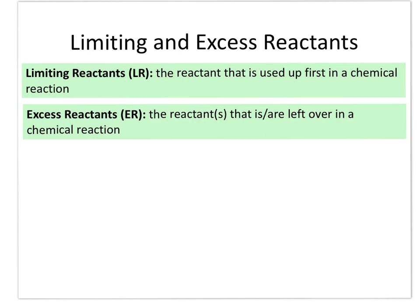Let's look at the calculation of excess reactant available after a reaction has occurred. As we've already discussed, your limiting reactant is the reactant that gets used up first in the chemical reaction, and it dictates the amount of products that you can theoretically obtain. The excess reactant is the reactant that is left over or remains after the reaction has reached completion.